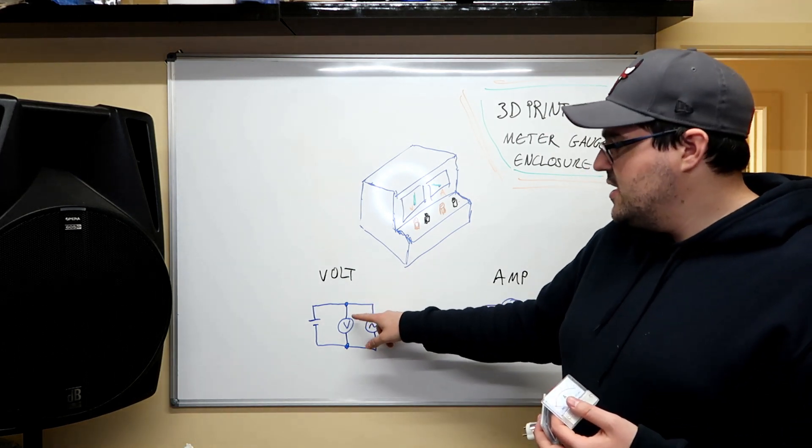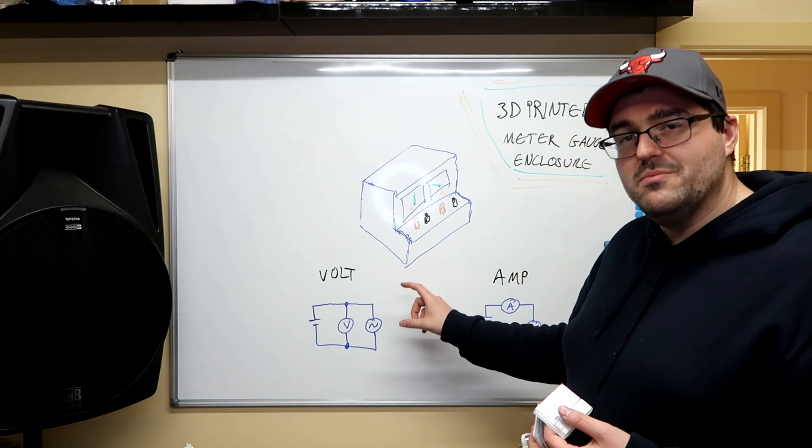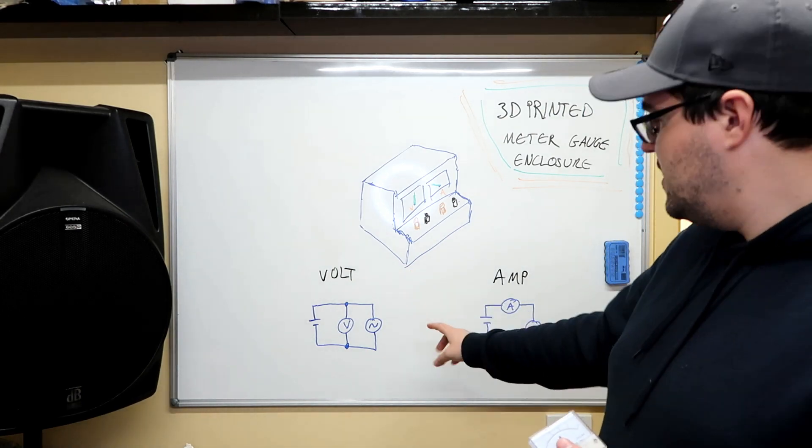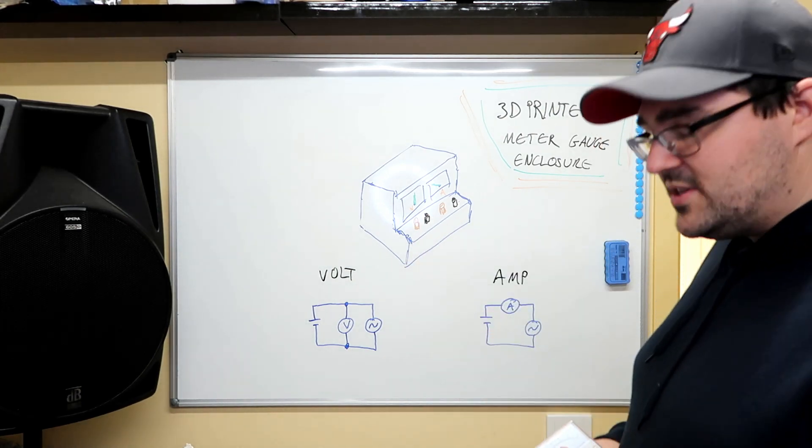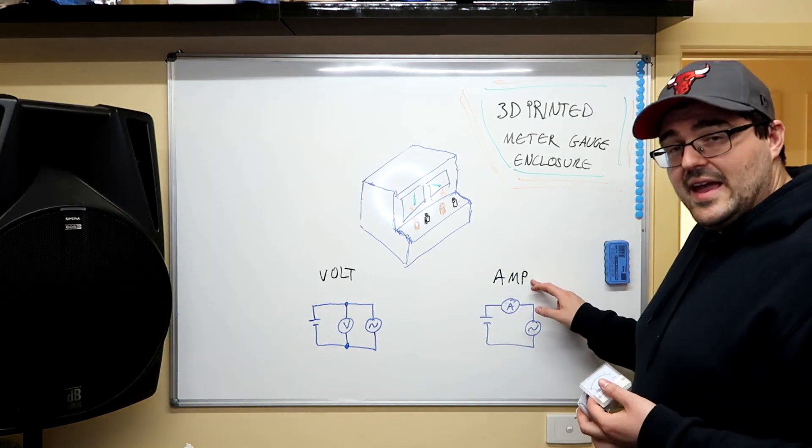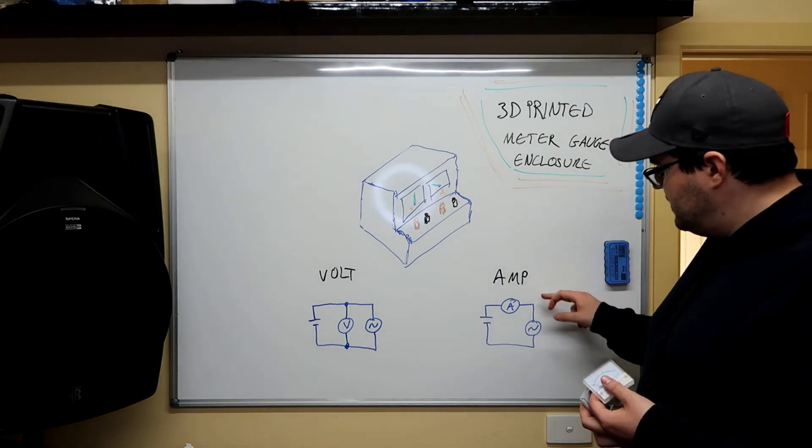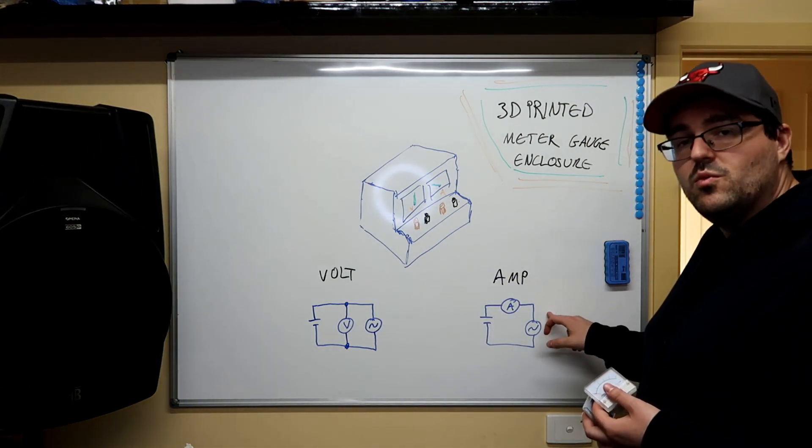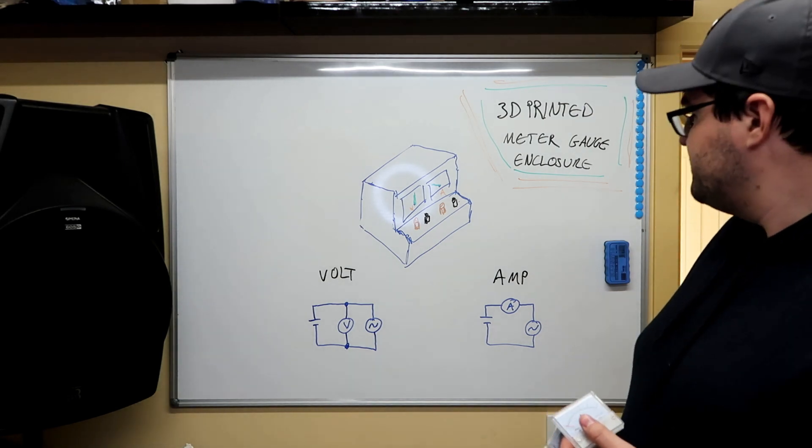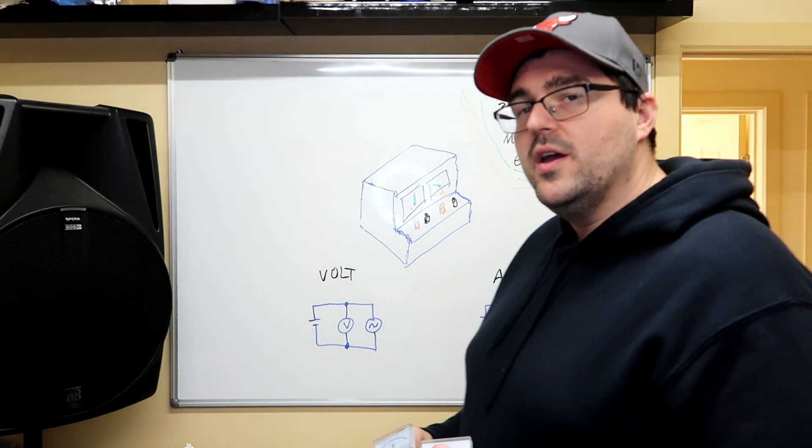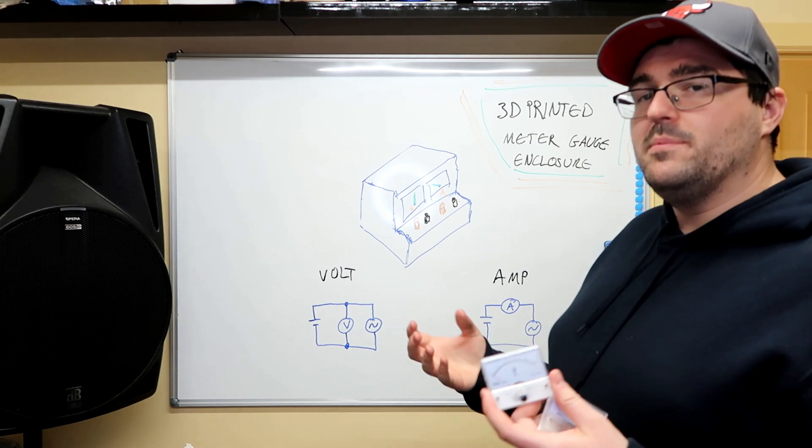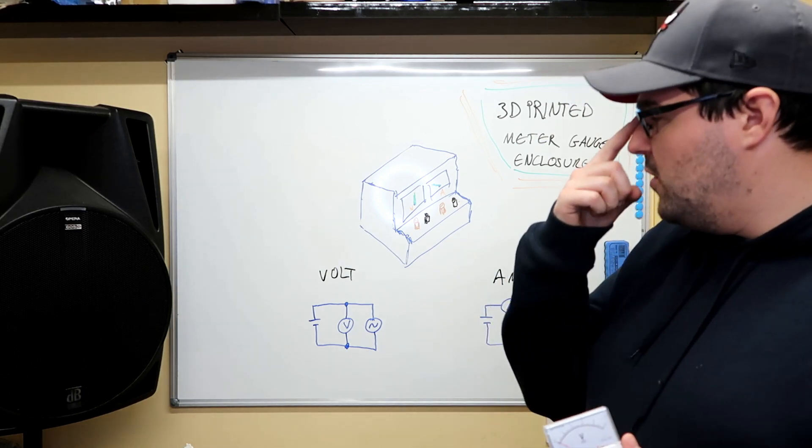Now just quickly, the reason why I have both is obviously the volt meter you would use to measure the voltage across the application that you're using in parallel, and then the amp meter we'd be putting in series with whatever it is that we want to measure.